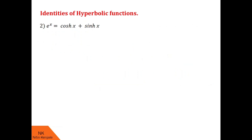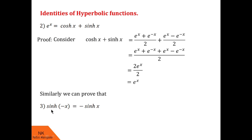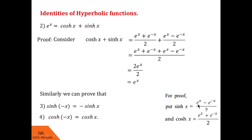Next, let us prove that e raised to x equals cosh x plus sinh x. Beginning with the right-hand side, we substitute the exponential forms of cosh x and sinh x. Simplifying, we see the RHS becomes 2 times e raised to x upon 2, which is simply e raised to x — the required LHS. Hence this identity is proved. Similarly one can prove that sinh(−x) equals minus sinh x and cosh(−x) equals cosh x, using the exponential forms. These two identities prove that sinh x is an odd function and cosh x is an even function.